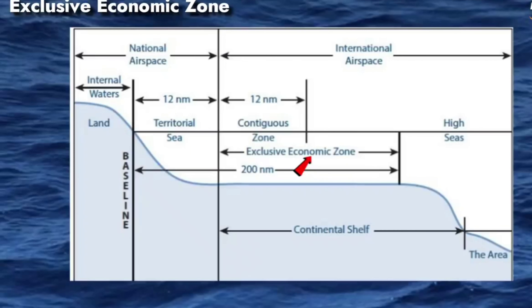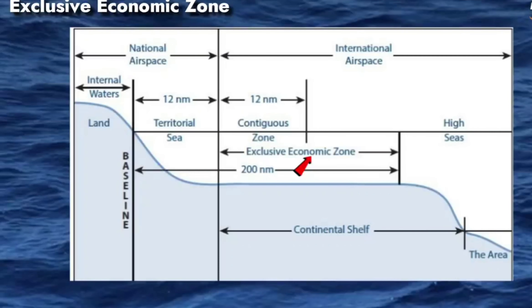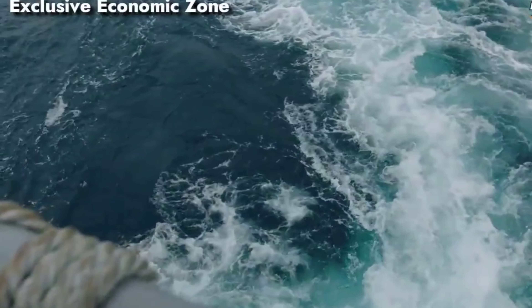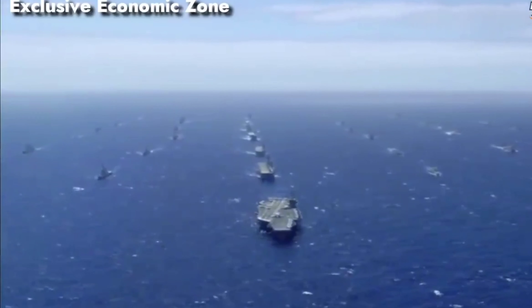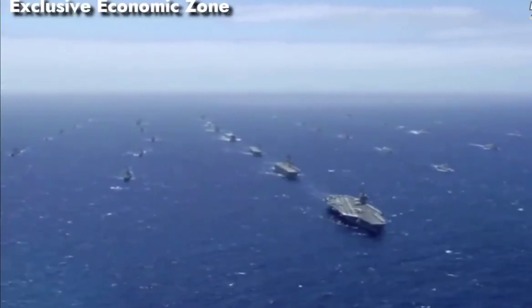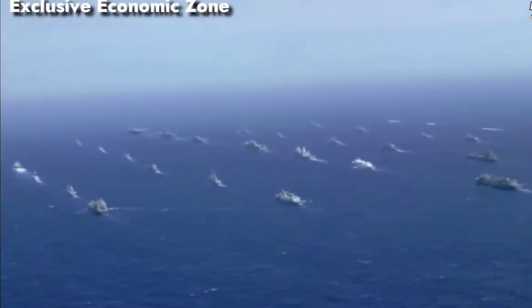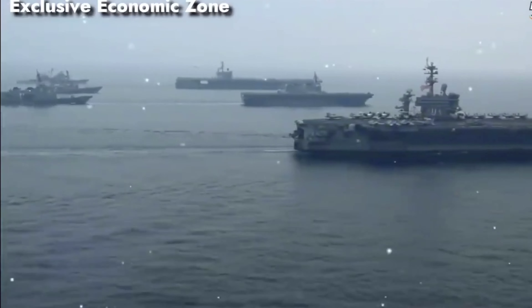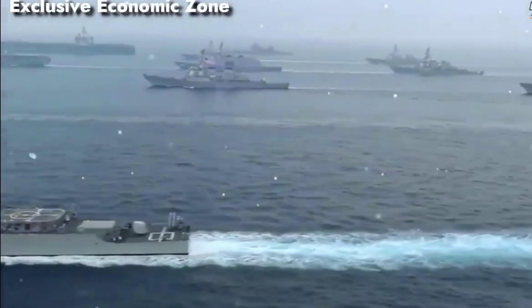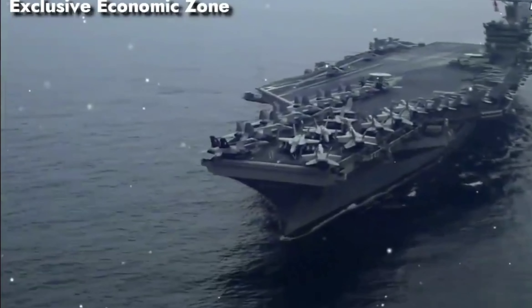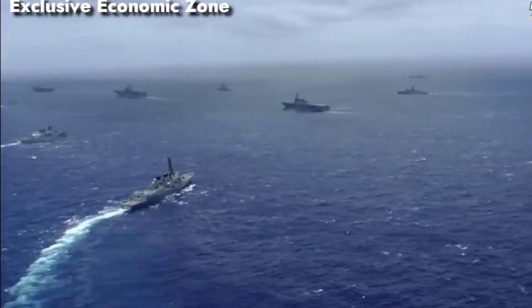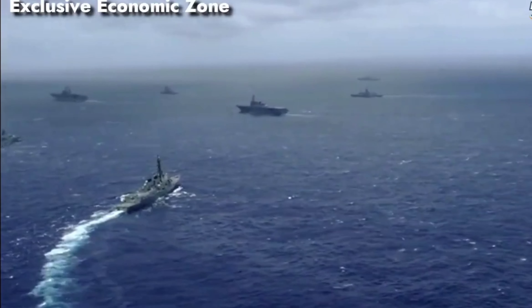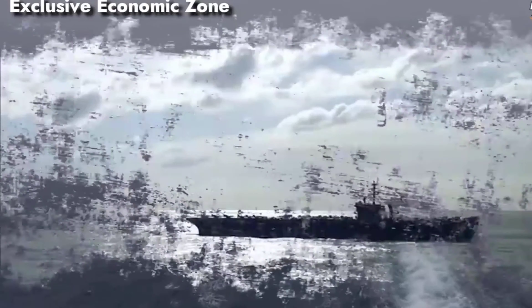Now let's talk about the most important zone — the Exclusive Economic Zone. As per UNCLOS, the EEZ is an area of the sea in which the state has special rights regarding the exploration and use of marine resources, including energy production from water and wind. It extends up to 200 nautical miles from the baseline. In that area, the government can use resources like mining, oil extraction, and energy production — the state has full rights to do so within the EEZ.